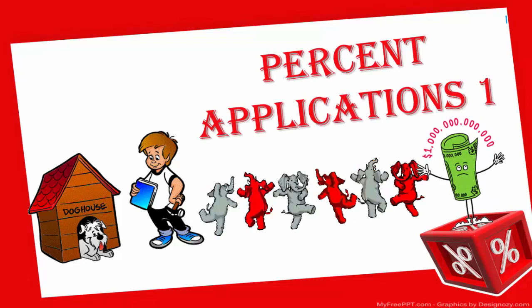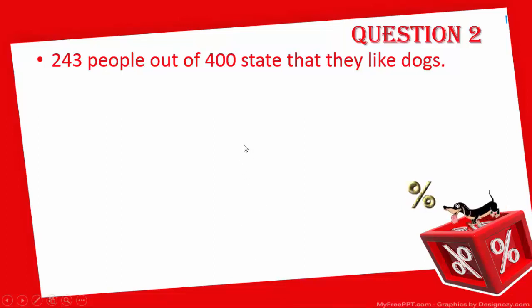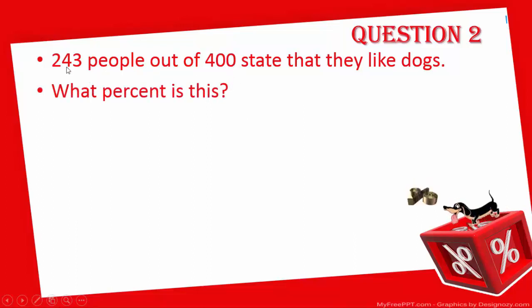Here we're going to work on a few percent applications. In question two, we're told that 243 people out of 400 people state they like dogs — this could be from a poll, interview, or however the information was gathered. We want to figure out what percent this is, so let's go work this out on the whiteboard.